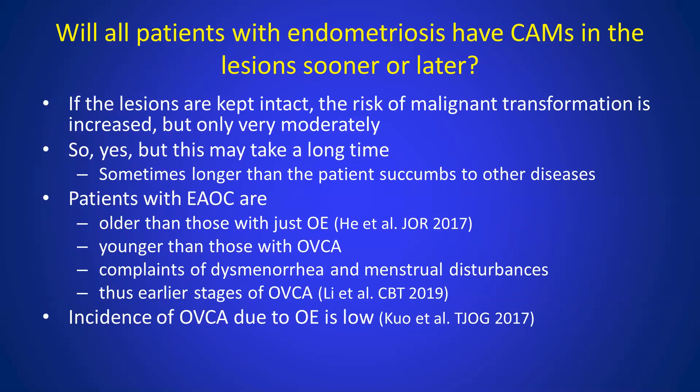Will all patients with endometriosis have CAMs in the lesion sooner or later? The answer is: if the lesions are kept intact, the risk of molecular transformation is increased, but only very mildly. It takes time. Patients with endometriosis-associated ovarian cancer are usually older than those just with endometriosis — it takes more time. But they're usually younger than those with ovarian cancer, because endometriosis symptoms like bleeding or dysmenorrhea bring them to medical attention earlier, explaining why they're usually at early stages of ovarian cancer.